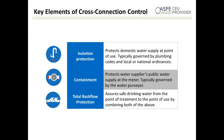What are the key elements of a cross-connection control program? The first is isolation. Isolation protects any cross-connection within the owner's premises through the use of appropriate backflow prevention devices, isolating any hazard to that particular location and protecting the remainder of the potable water system from contamination. Isolation protects you from the hazards within your own building or property, and is typically governed by Universal Plumbing Code or International Plumbing Code.